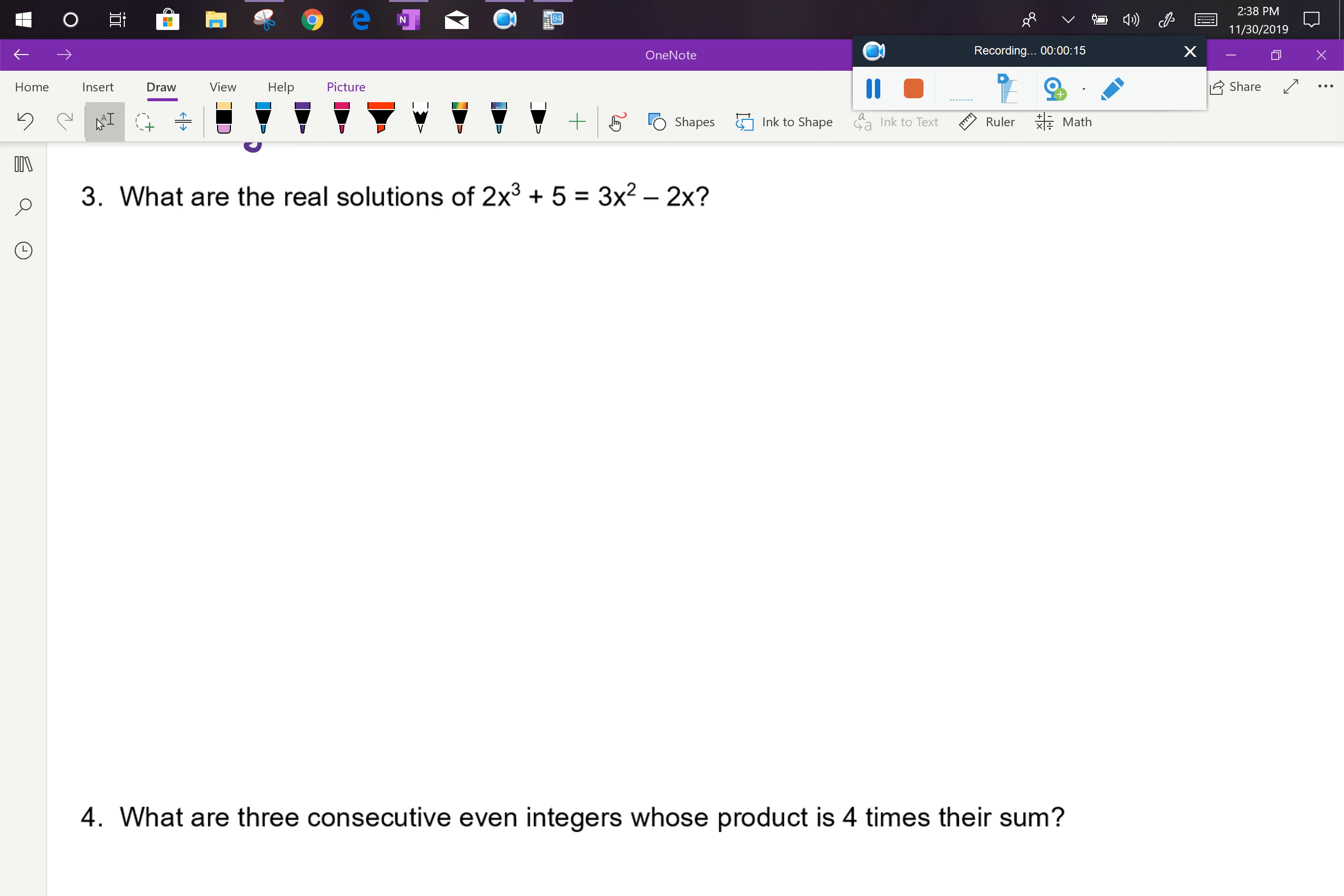First, I would solve it for zero. That's the primary solution method, although we'll also talk about the alternate solution method. So if I want zero to be alone, I'm going to rewrite it as 2x³ - 3x² + 2x + 5 = 0.